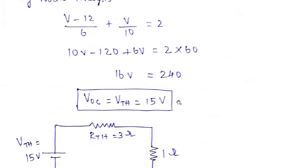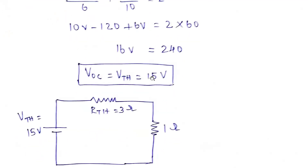So we take LCM as 60. Simplifying: 10(V minus 12) plus 6V equals 2 times 60, giving 16V equal to 240 plus ... so 16V equals 40. Therefore V_oc, or V_th, the open circuit voltage, is 15 volts.